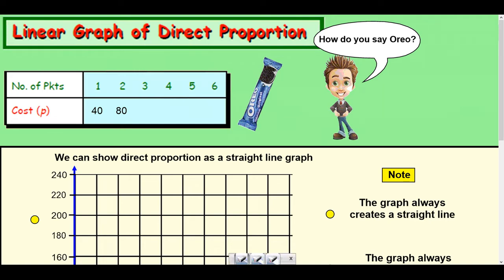So firstly over here we've got a table that's a direct proportion table, and you've got one packet of Oreos costs 40p, two packets of Oreos costs 80p, therefore if we're doing three packets, you're adding on 40 every time to get 120, that's direct proportion there because it's increasing the same amount every time. So four packets, an increase of 40 would be 160, five packets would be 200, and six packets 240.